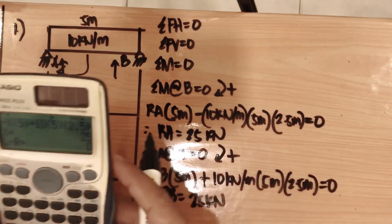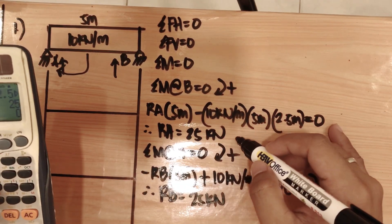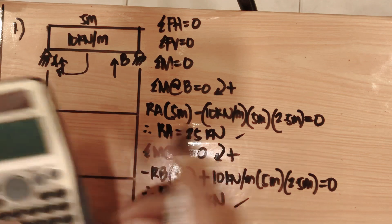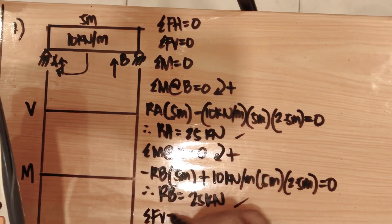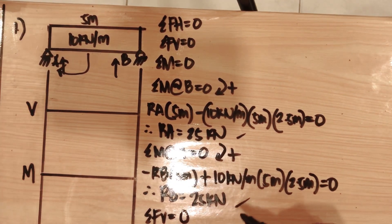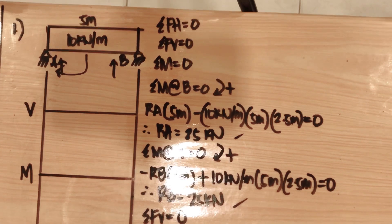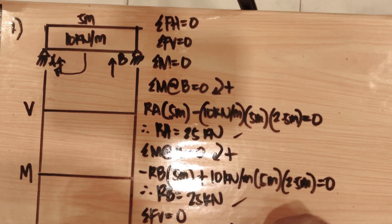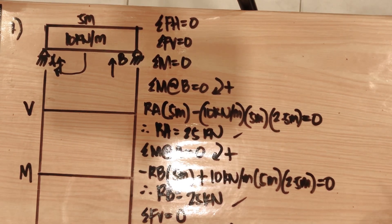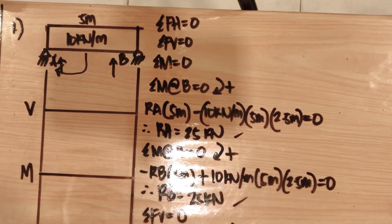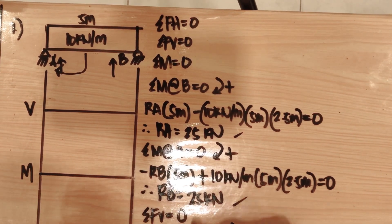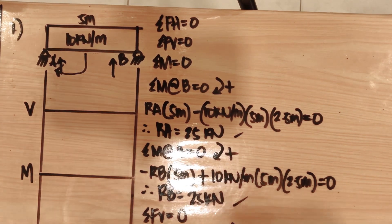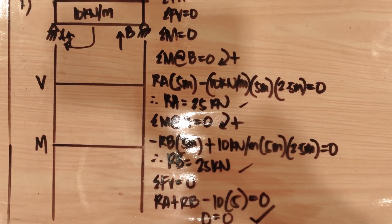To check the support reactions at A and B, we use summation of forces vertical equals zero. RA plus RB minus 10 times 5 equals zero. So 25 plus 25 equals 50, minus 50 equals zero. This confirms our values are correct.